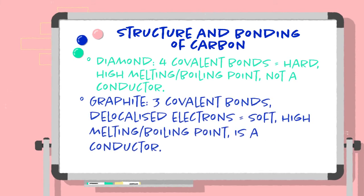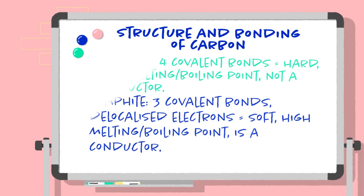Graphite forms three covalent bonds and has delocalised electrons moving between its layers, therefore can conduct electricity, and makes it soft with a high melting and boiling point.